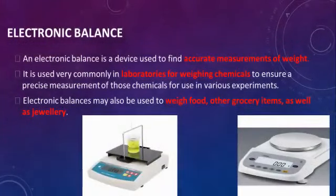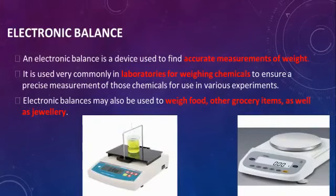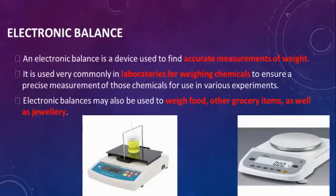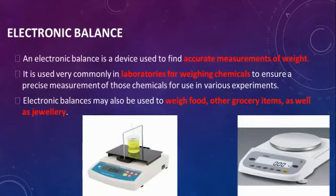Next, we look at the electronic balance. An electronic balance is a device used to find accurate measurements of weight — the exact measurement of an object. It is very commonly used in laboratories for weighing chemicals, in jewelry shops to weigh grams of jewels, and for weighing food and other grocery items.